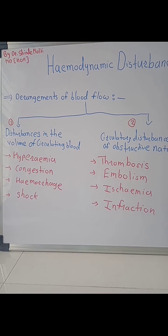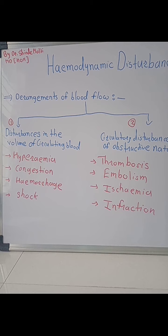Today we are going to discuss one of the topics from general pathology, that is hemodynamic disturbances. This comes under hemodynamic disorders and is related to the circulation of blood. There are three main basic requirements for normal circulatory function: first, normal anatomic features; second, normal physiologic control; and third, normal biochemical composition of the blood.